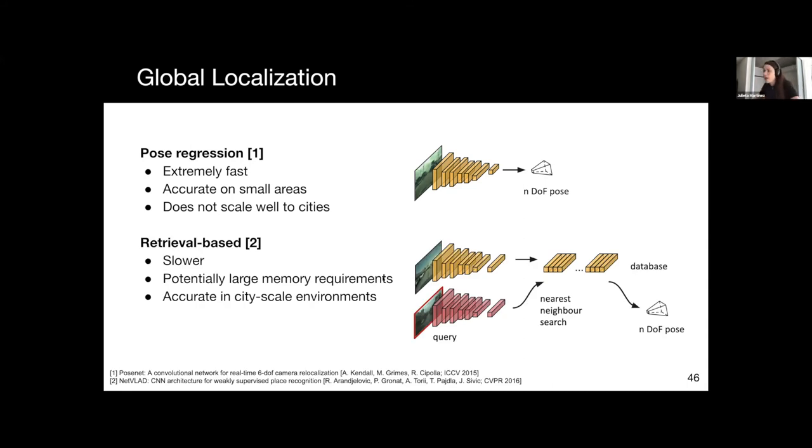The other main approach here is called retrieval-based localization. The main idea here is that, offline, we're going to go through a bunch of pre-localized sensor observations. We're going to pass them through a network or somehow obtain a representation. Then we're going to store these representations in a database. We're going to have a mapping between these representations and the poses when they were captured. Then, online, we're going to run the image through the same network. We're going to obtain a vector. Then we're going to do nearest neighbor search on this entire database. After we find the nearest neighbor, we simply copy the pose of the nearest neighbor that we found. The disadvantage is that, obviously, this is a little bit slower because we have to do a forward pass and then we have to do the nearest neighbor search. Potentially storing all these vectors can pose a larger memory requirement. However, these methods tend to scale well to entire cities.